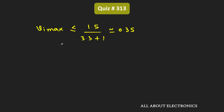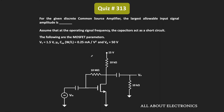Therefore Vi_max should be less than or equal to VT divided by (Av + 1), which is 1.5 divided by (3.3 + 1), roughly equal to 0.35 V. The maximum allowable value of this input signal is 0.35 V — the peak value of the input signal must be less than or equal to 0.35 V for the MOSFET to operate in the saturation region and function as an amplifier. For the given question, the answer is 0.35 V.